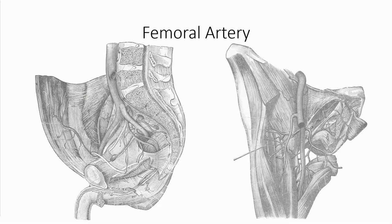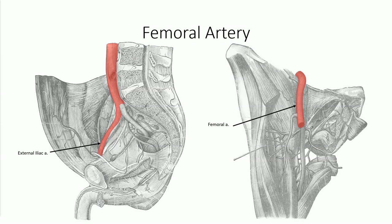We're going to take a look at the principal arterial supply to the lower limb, but first, let's back up to review the vascular supply in the pelvis. The descending aorta splits into the common iliac, which in turn splits into the internal and external iliac artery. The external iliac artery passes through the femoral triangle where it becomes the femoral artery. Also recall the presence of the obturator artery off the internal iliac artery, which projects through the obturator canal to supply blood to the superior portion of the medial compartment of the thigh.